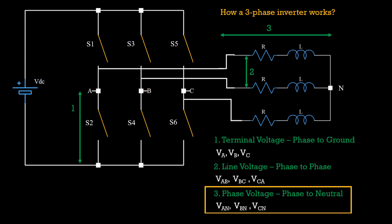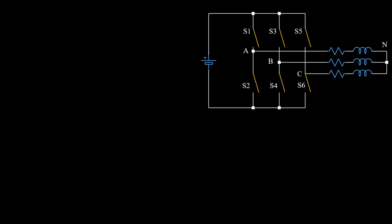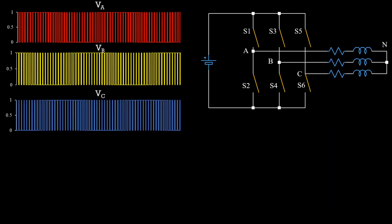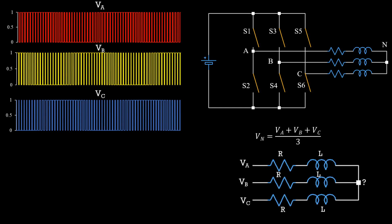Now, based on the switching patterns, this is the voltage that you will see at the terminals. The neutral voltage Vn is nothing but Va plus Vb plus Vc divided by 3. To derive this, you have to solve this circuit. Take this as an activity. It is an easy one. You just have to apply the superposition to get this answer.